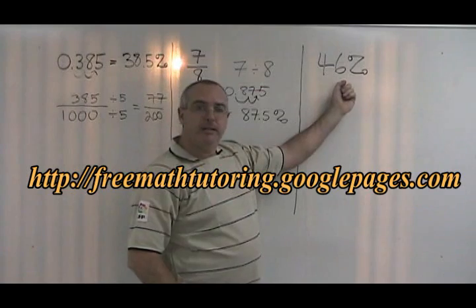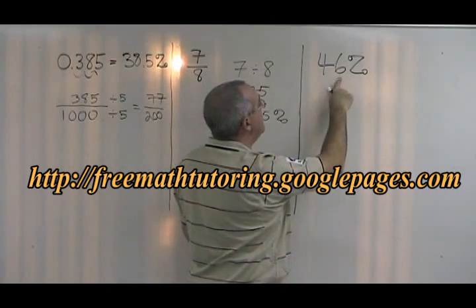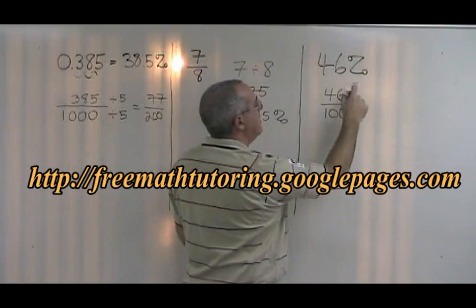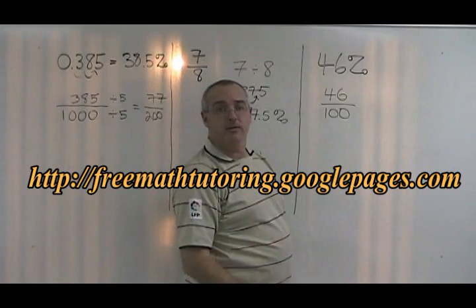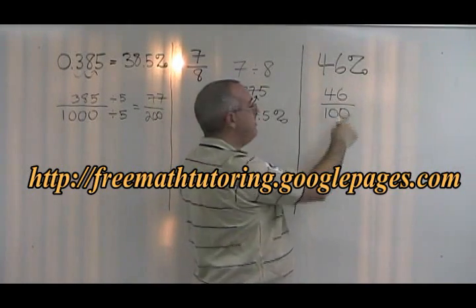When we start with a percent, we can convert it to a fraction very rapidly by saying 46% must be equal to 46 over 100. The word percent means over 100. So any number with a percent, you can put the number on the top and 100 on the bottom.